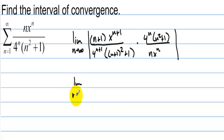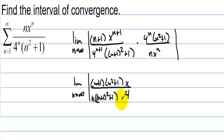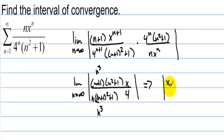We have the limit as n approaches infinity. In the numerator we have n plus 1 times n squared plus 1, which will end up being n to the third, and then we have 1 extra x on top. In the denominator we have 1 extra 4, and we have n times n plus 1 squared plus 1. The leading terms in both numerator and denominator will be n to the third, so this goes to x over 4, and that has to be less than 1.